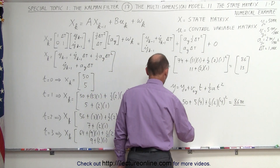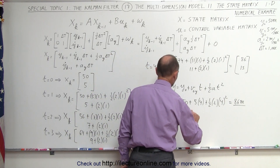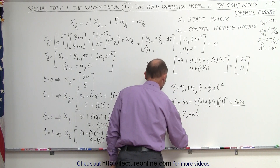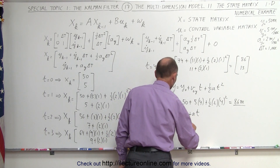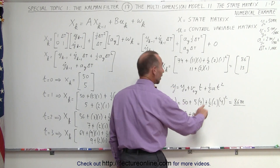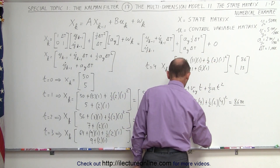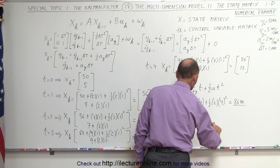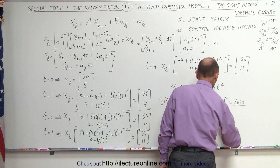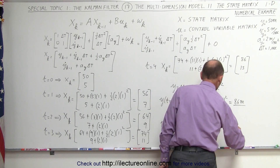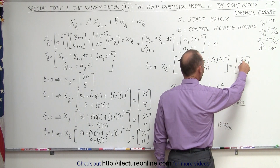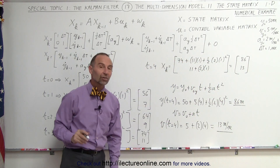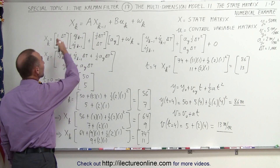Velocity-wise, velocity is equal to the initial velocity plus acceleration times time. Calculating the velocity when time is equal to 4: we start at 5 meters per second, plus the acceleration (2) times the time (4), that's 8 plus 5, which is 13 meters per second. Notice we do get the exact correct position and the exact correct velocity using the equation of kinematics, just like we did using the state matrices.